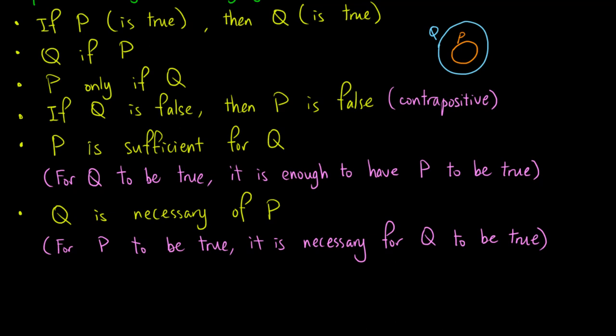P implies q means that the circle of p lies entirely inside the circle of q. Here, 'p is sufficient for q' means that if I lie inside the circle of p, then it is enough to guarantee that I am inside the circle of q. On the other hand, 'q is necessary for p' means that if I want to be inside p, it is necessary that I am at least inside q. In other words, if I am not even inside q, then I am certainly not inside p. So in some sense, p implies q means that p is more specific than q, or q is more general than p. Of course, they can in fact be equivalent, which I will talk about later.